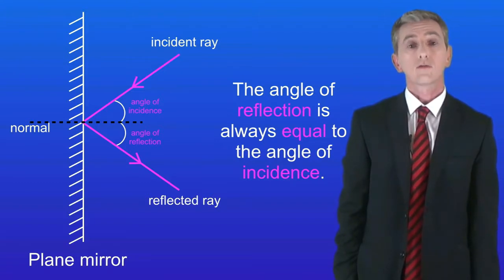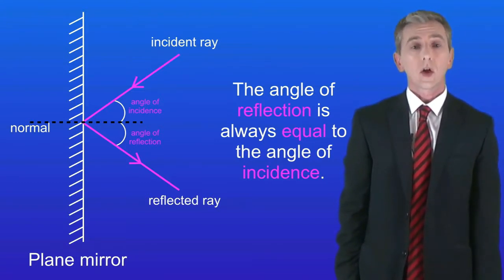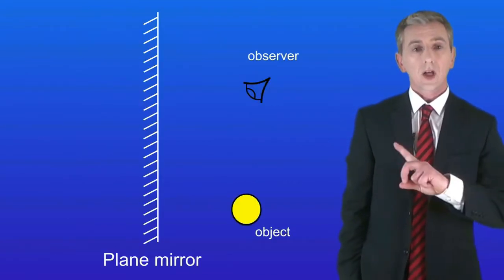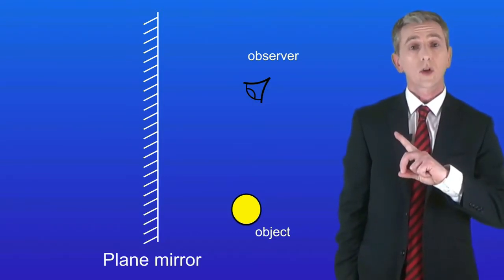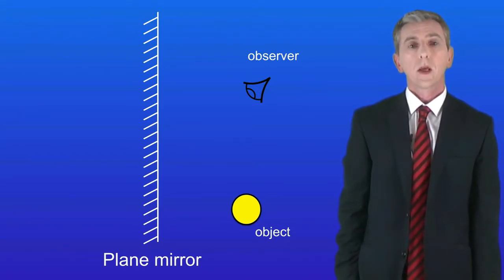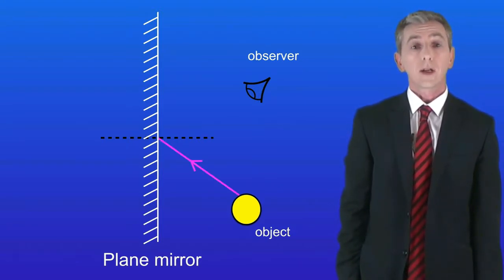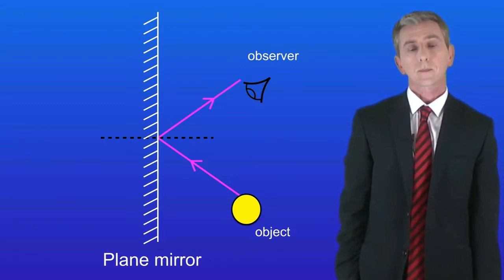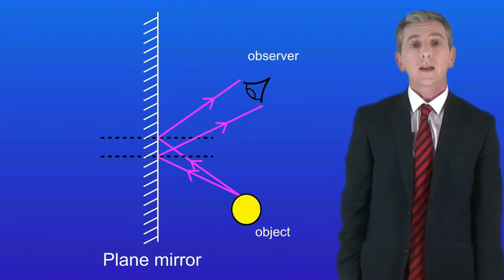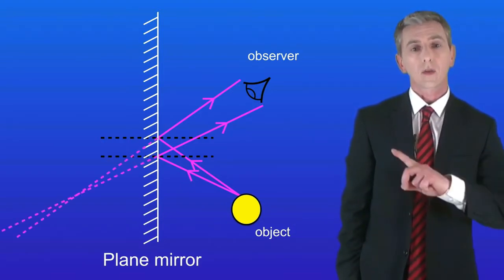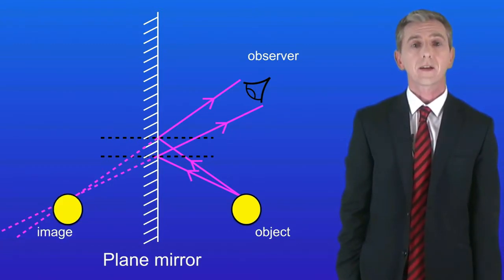We're looking at how to construct a ray diagram to show the position of an image in a mirror — this is easier than it sounds. With a plane mirror and an object nearby, an observer looks at the image. First draw a normal line roughly halfway between the object and the observer. Draw an incident ray from the top of the object to the mirror so it hits the normal and reflects at the same angle. Draw a second normal line and another ray from the object reflecting at the same angle. Finally, extend these lines behind the mirror — where they meet shows the position of the reflected image.